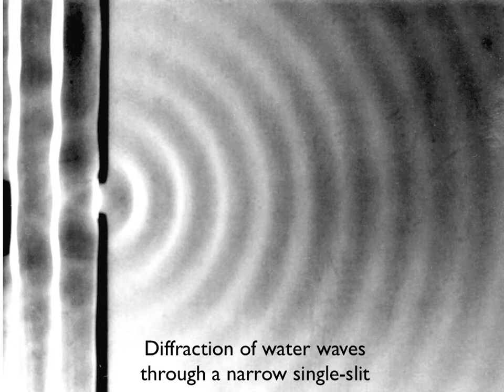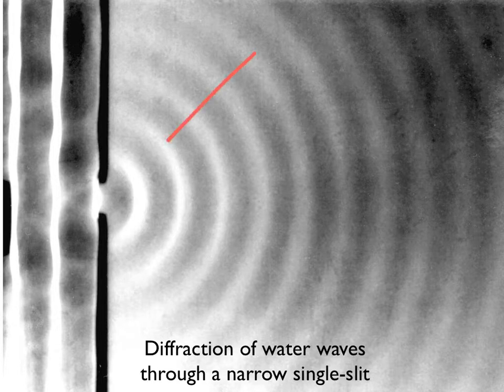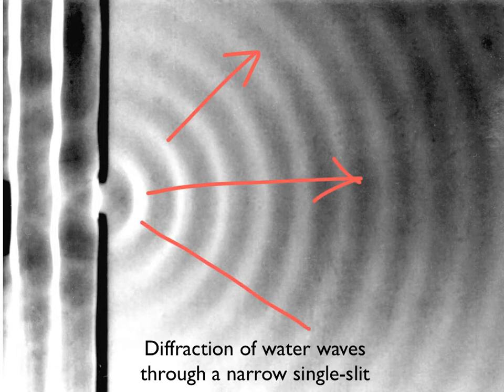Here's a photo of water waves in a ripple tank undergoing diffraction as they pass through a gap in the barrier, and just like our previous slide, you can see that the waves are spreading out as they pass through the gap.